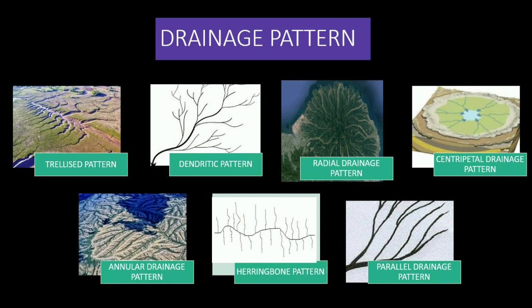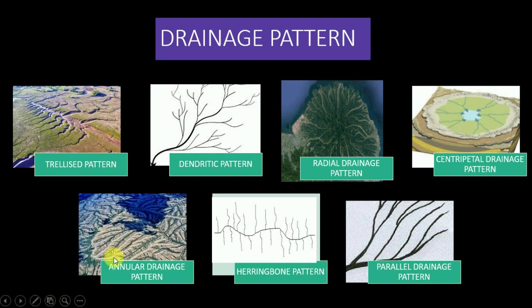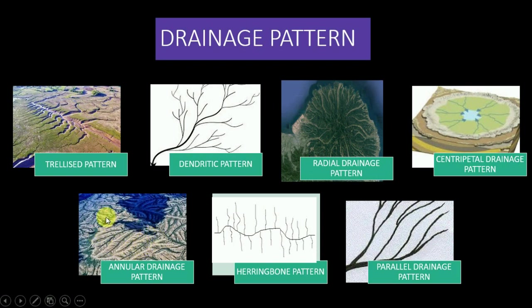Radial drainage pattern, also known as the centrifugal pattern, is characterized by streams which converge at a point that is generally a depression or basin. Annular pattern, also known as the circular pattern, is formed when the tributaries of the master consequent streams develop in the form of a circle. These patterns form over various hard and soft rock beds, where differential erosional downcutting creates the annular form.